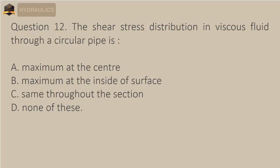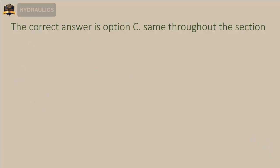Question 12: The shear stress distribution in viscous fluid through a circular pipe is — A) maximum at the center, B) maximum at the inside surface, C) same throughout the section, D) none of these. The correct answer is option C: same throughout the section.